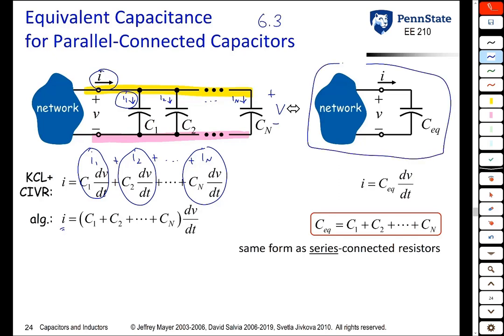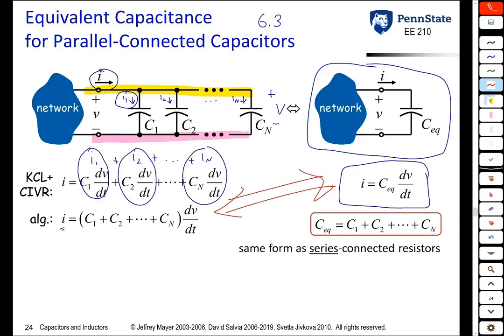If we wanted to replace those N parallel capacitors by one equivalent capacitor, it's going to have current I and voltage V related by the same expression. For these to be the same, C equivalent has to equal the sum of the individual capacitor values. The equivalent capacitance of parallel connected capacitors is just the sum of the individual capacitor values — the same form as for series connected resistors. So resistors in series add, and capacitors in parallel add.